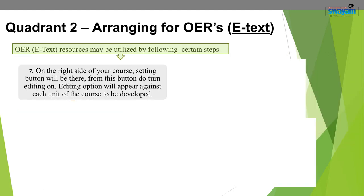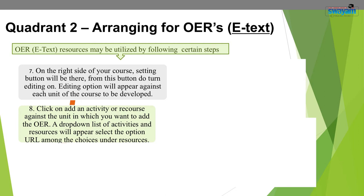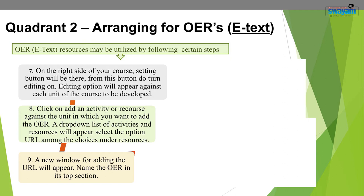On the right side of your course, a settings button — an orange color button — will be there. From this button, do turn editing on. An editing option will appear against each unit of the course. Then click on 'Add an activity or resource' against the unit in which you want to add the OER. A drop-down list of activities and resources will appear. Select the option URL under resources. A new window for adding the URL will appear.